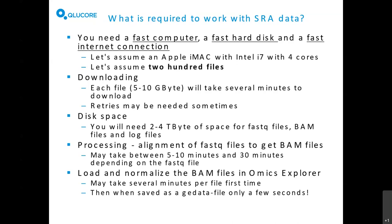Not all projects have 200 files, but just to remind you it could require something like that. Processing may also take time. Files downloaded from the SRA archive are mostly in FASTQ format and need to be aligned, which may take between 5 and 30 minutes depending on how the FASTQ file is organized. Then you need to load and normalize the BAM file in Omics Explorer, which may take several minutes per file the first time, but then you save the data file and the next time you open it in just a few seconds.